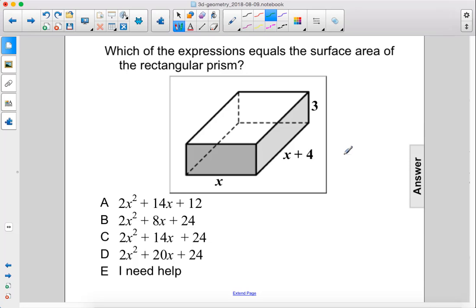Which of the expressions equals the surface area of the rectangular prism? Alright, let's start with this rectangle on top, which has an equal area to the rectangle on the bottom. So we'll just say 2 times the area of the top is going to be the top plus the bottom.